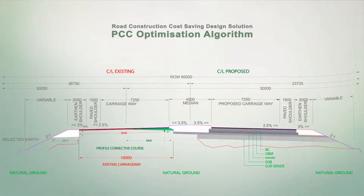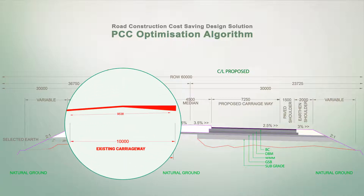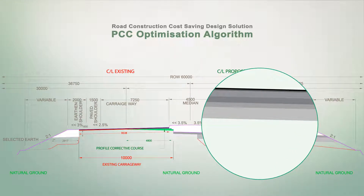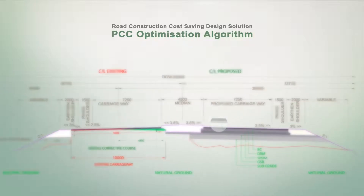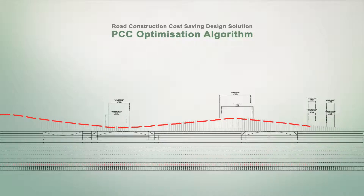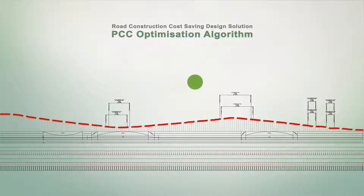This can be achieved by designing an optimized vertical profile to accommodate the minimum thickness of the profile corrective course. Especially when the profile corrective course is done with structural layers like BM, DBM, BC, etc., the designing is done such that there is no cutting of the existing good pavement, either longitudinally or transversely, while adhering to IRC code references and constraints.